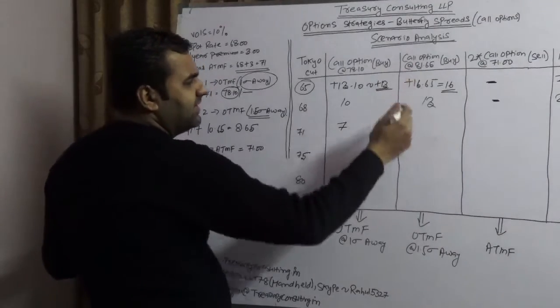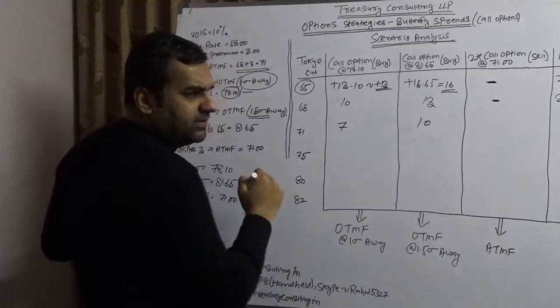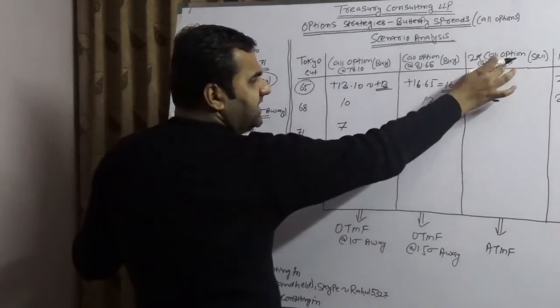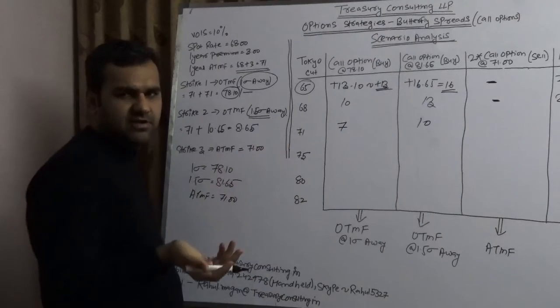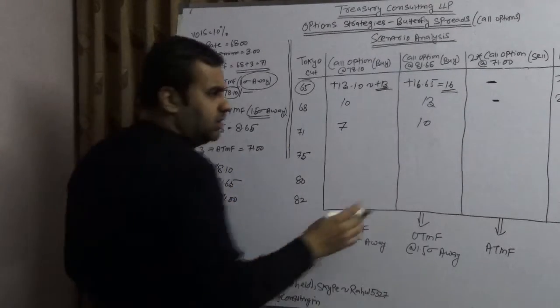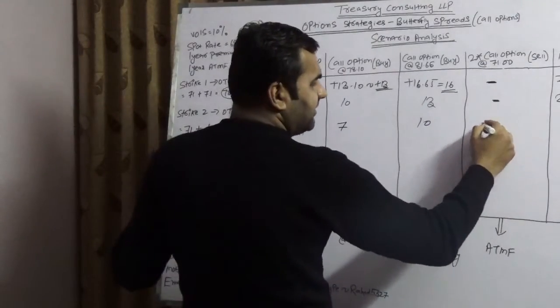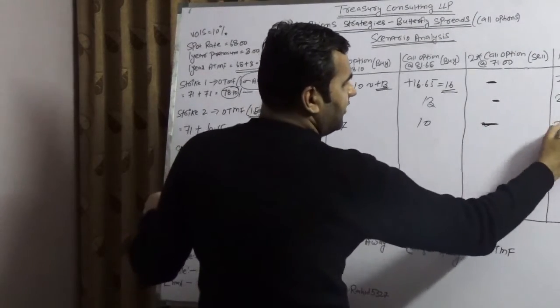Here you would have 71 and 81, here you would have a gain of 10 rupees. Here somebody has a right to buy from you at 71, market is at 71. Would you buy? Surely not. So here you have a gain flat, nothing. So you would have a gain of 28.